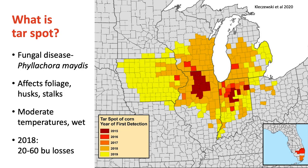Tar spot of corn is a relatively new disease to the Midwest. It was first detected in Illinois and Indiana in 2015, and since that time has spread throughout the Midwest as well as Florida. This is a fungal disease that affects the foliage, husks, and stalks of corn. It likes cool, moderate temperatures — that's 70 to 80 degrees — and humid conditions. Following a good rain event, it's going to be perfect for this disease to take off after canopies have closed.